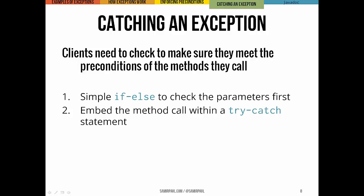A few slides ago I kept mentioning the try-catch statement as the thing we keep looking for whenever we are bouncing back through the call stack, looking to see how we should handle a particular exception that was thrown. Using exceptions can make your code pretty foolproof, but any client code calling your method still needs to check those methods' preconditions if they don't want to trigger those exceptions and halt their programs with runtime errors. You could just use a simple if-else statement to ask all the right questions about the parameters before you call a method. Or you could stick the method call inside a try-catch statement.